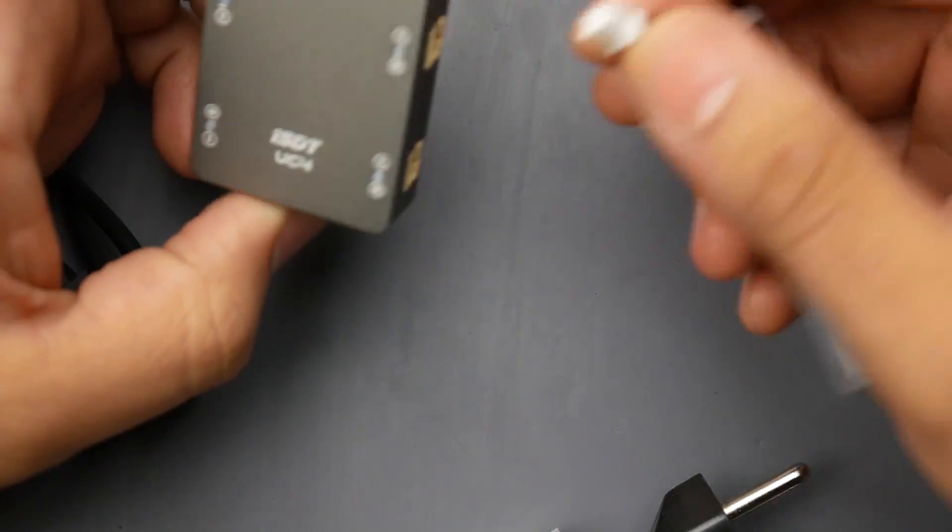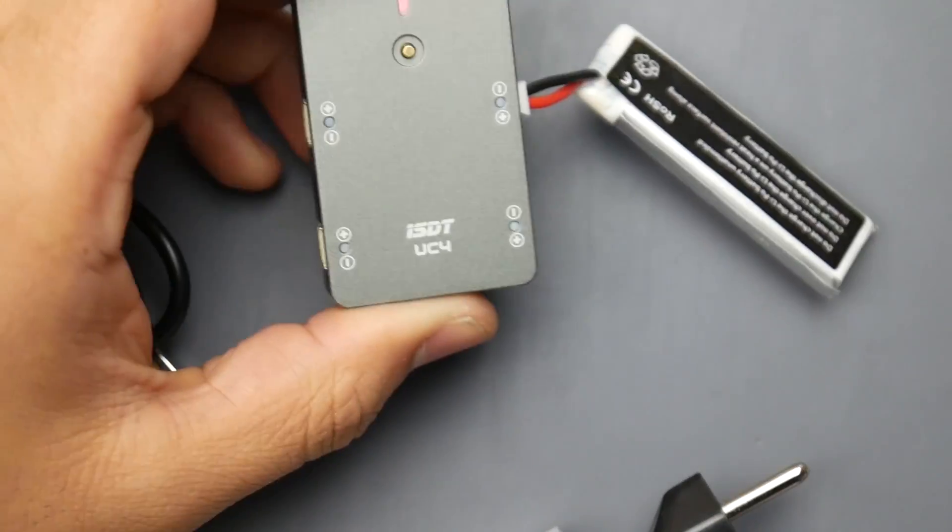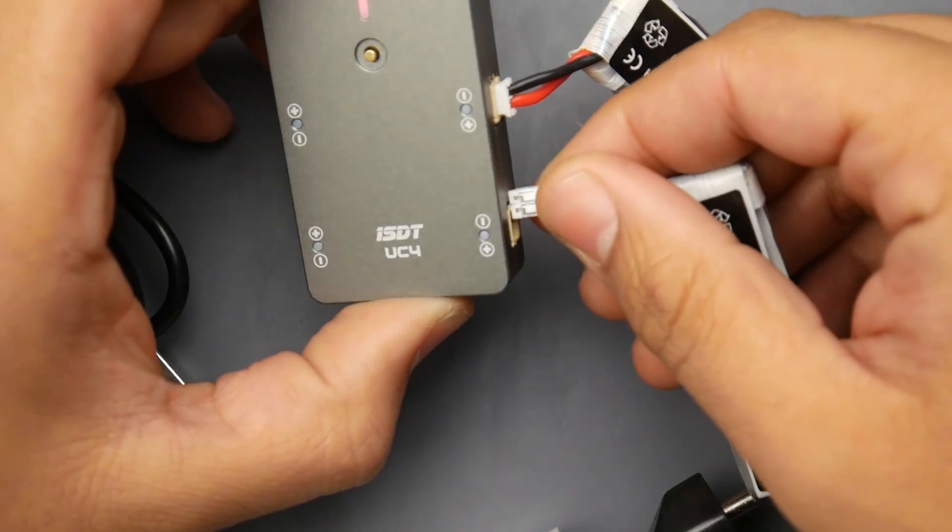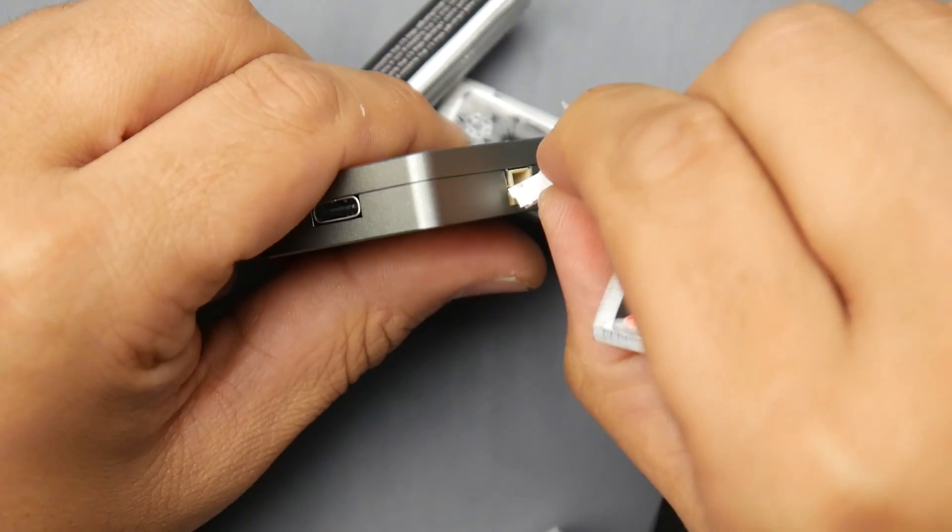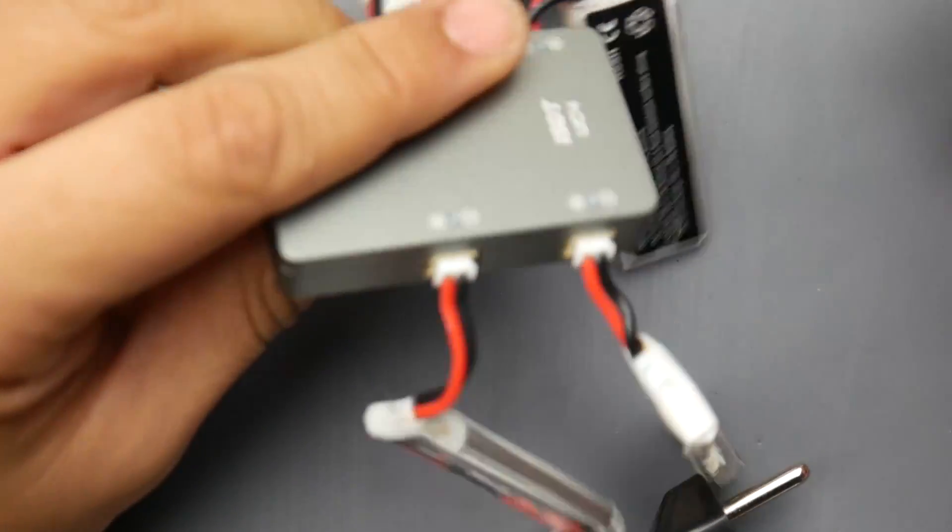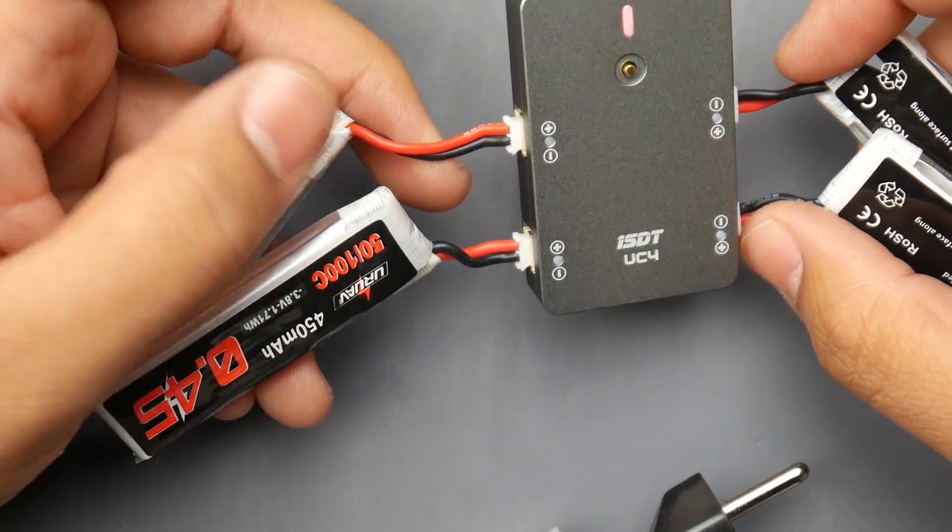As you can tell it takes these types of connectors, just the standard size nowadays for the 1S LiPos, so that's really nice. But again I do really wish they could release some sort of an update that'll allow this to charge the 4.35 volts for the HV LiPos.